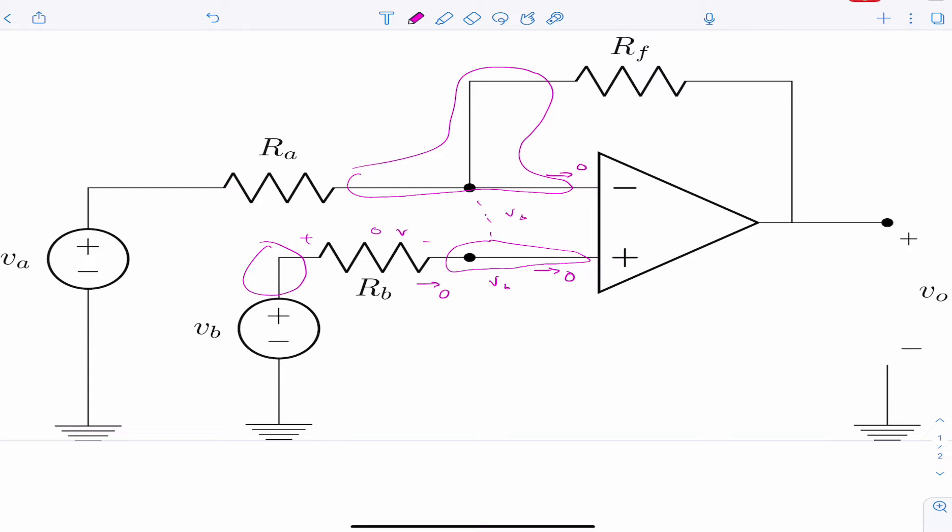And now we are in a great position to do some nodal analysis here. So if we want to sum the currents leaving the negative or inverting terminal, we have three of them. Well, one of them is zero, so we're just going to ignore it. And what we have here is, for the first current,